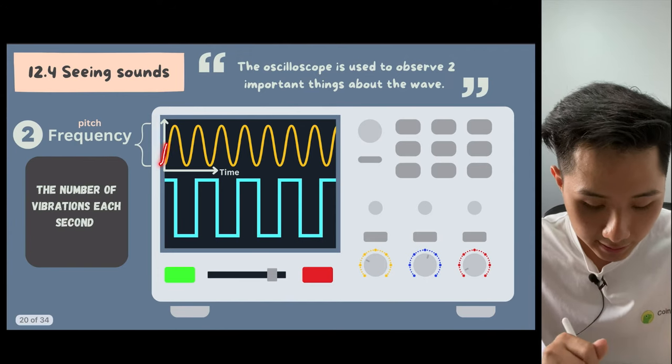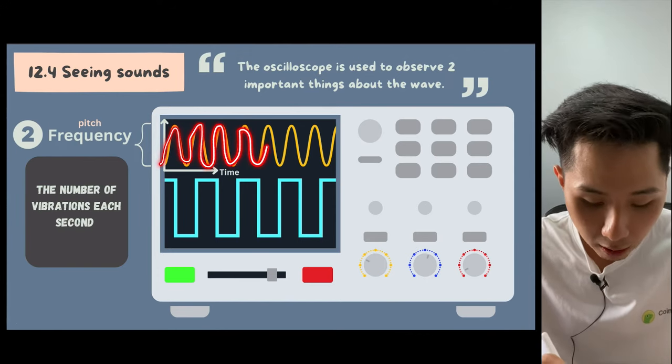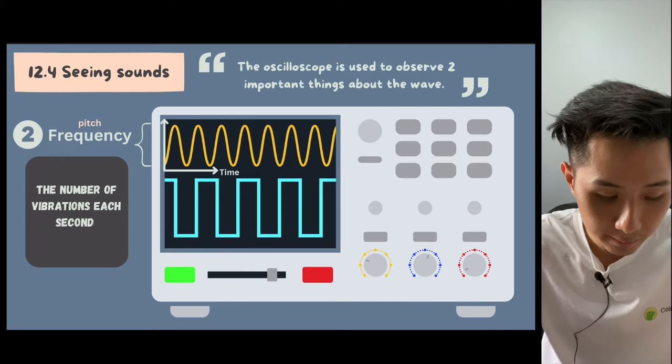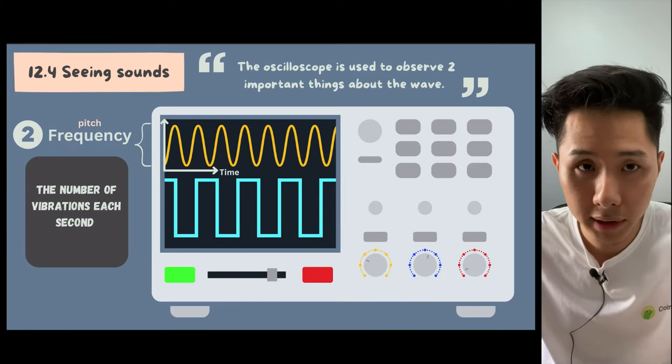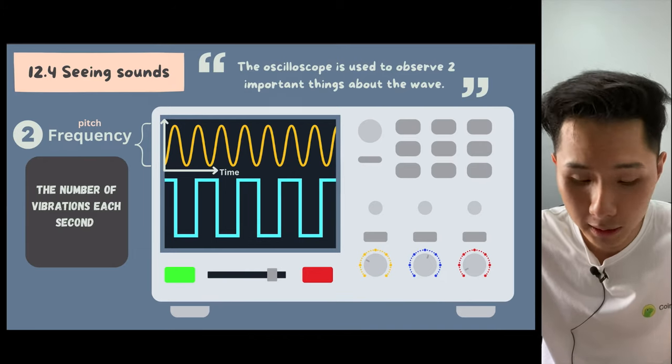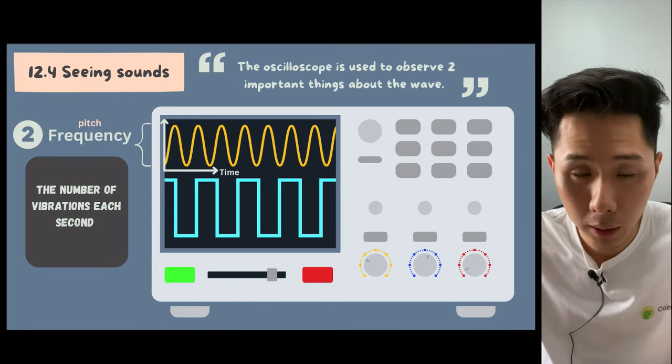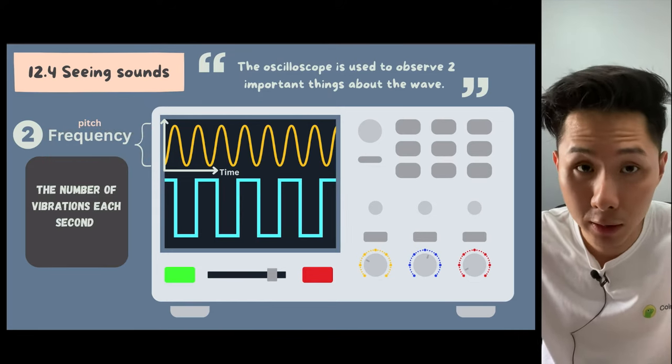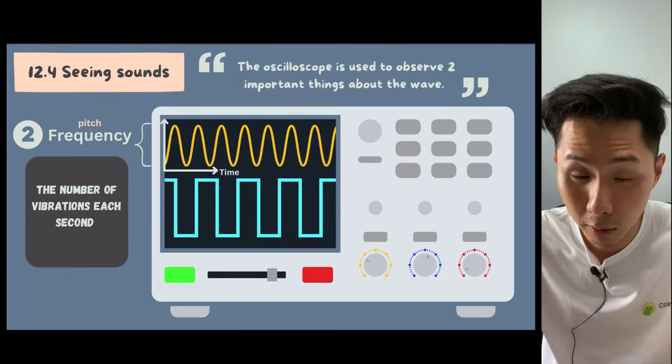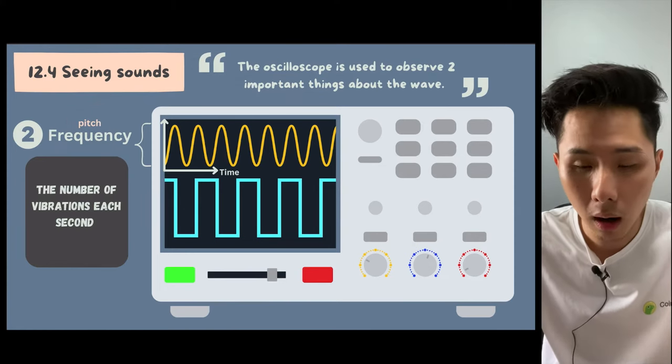The second thing is the frequency, meaning how frequent a graph is. We'll learn more about the properties of waves in chapter 14, but for now, just know that the frequency of a sound wave basically determines its pitch. The higher the frequency of the sound wave, the higher the pitch of the sound.